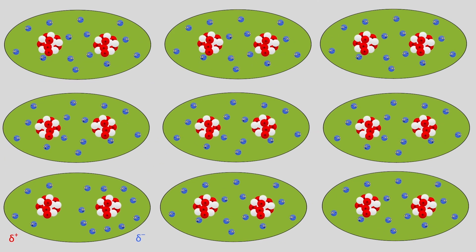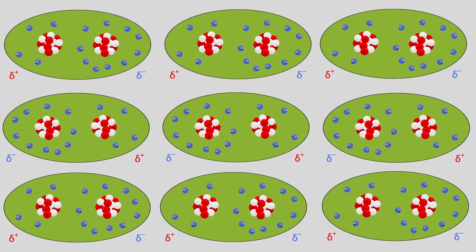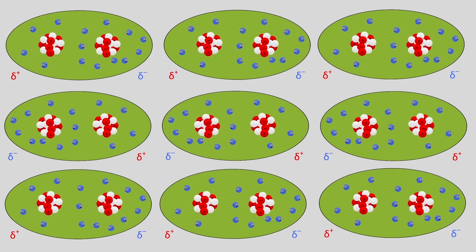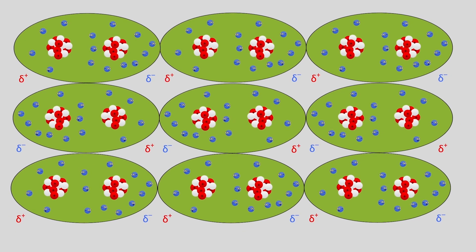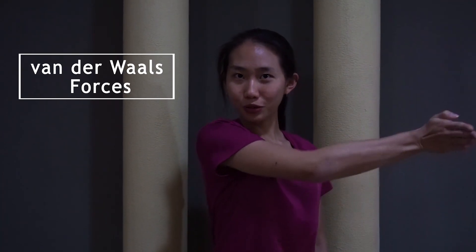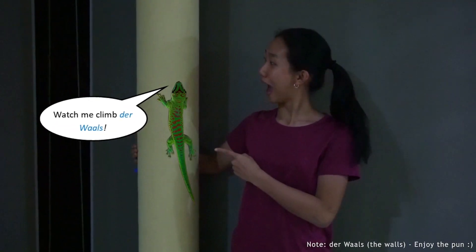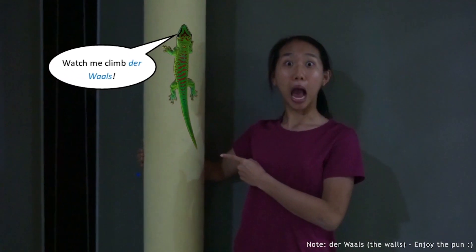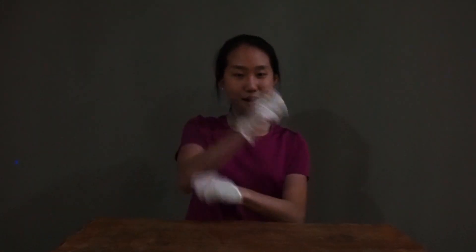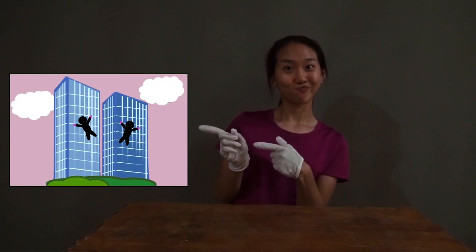Surrounding molecules get induced into this state! And since opposite charges attract, the molecules get pulled together. We call these van der Waals forces. Correctly aligned, they pull close neutral surfaces together. That's how geckos climb walls, and how engineers created these amazing gecko gloves.